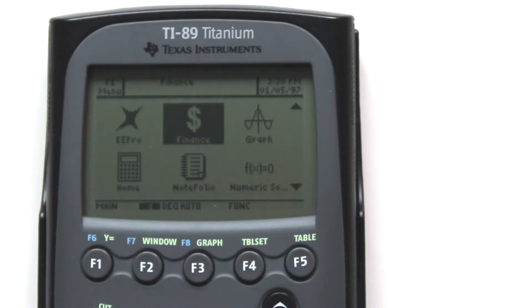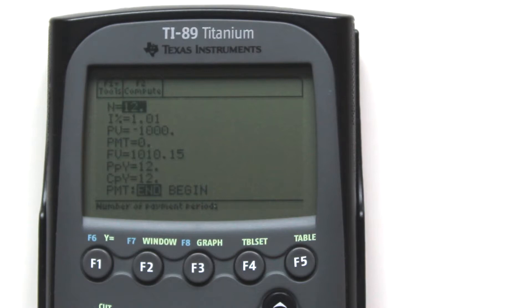Let's open the Finance App. Highlight the Finance App and hit Enter. This is information from Problem 1. To clear this data, hit F1. This drop-down box appears, and we want to choose number 8, Clear Editor. You can either scroll down and highlight number 8 and hit Enter, or you can directly hit 8 on the Calculator Keypad.